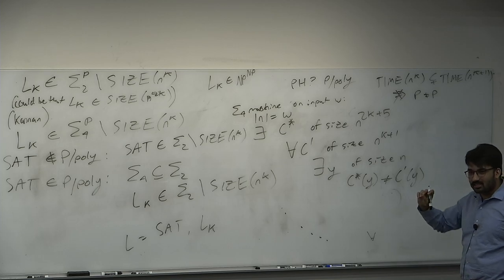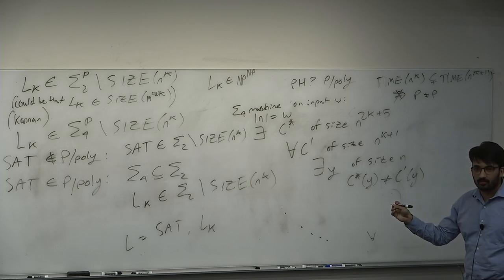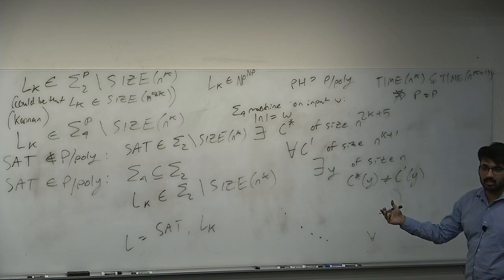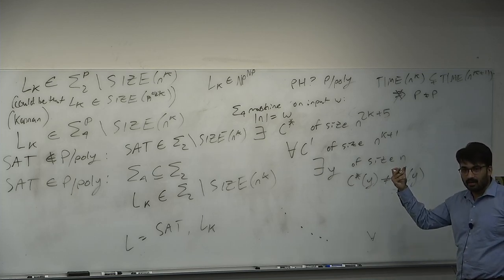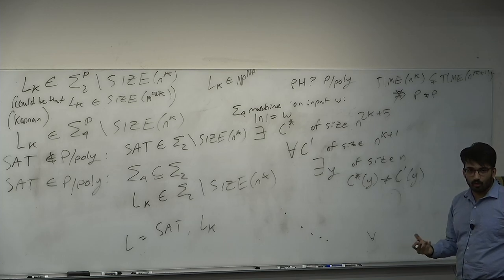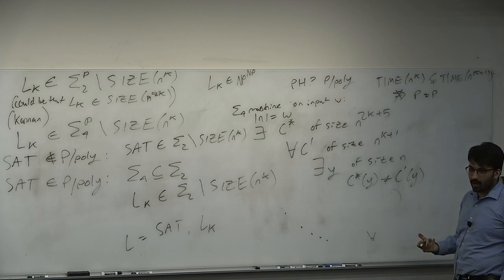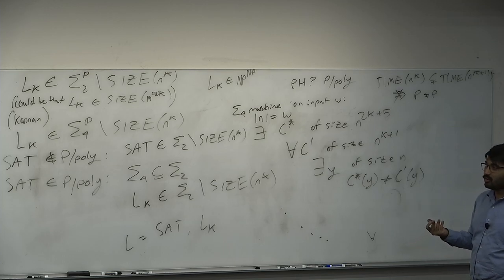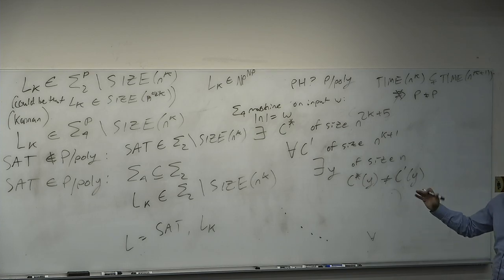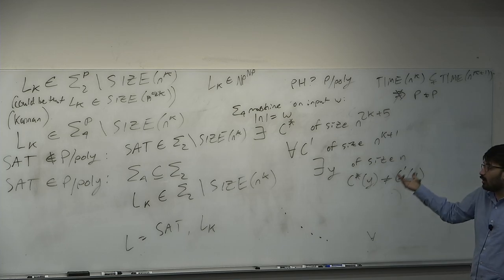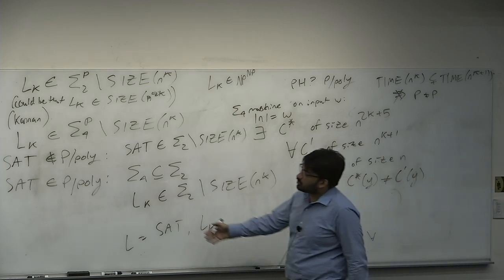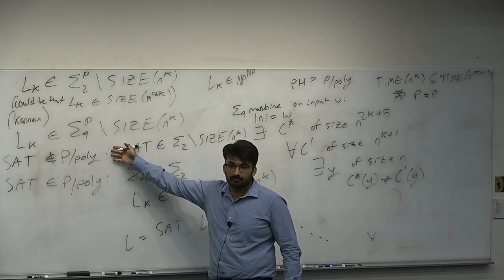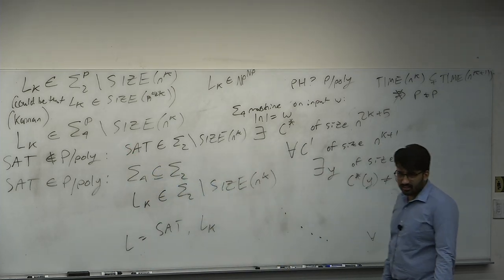Beautiful application, almost like a corollary to Karp-Lipton. Non-constructively, we know there is a language in NP^NP that does not have n^k size circuits. What the language is, we have no idea. We have failed to prove circuit lower bounds on any specific language — only weird non-constructive results like this or the Shannon counting argument. But we know one of these two things must be true.